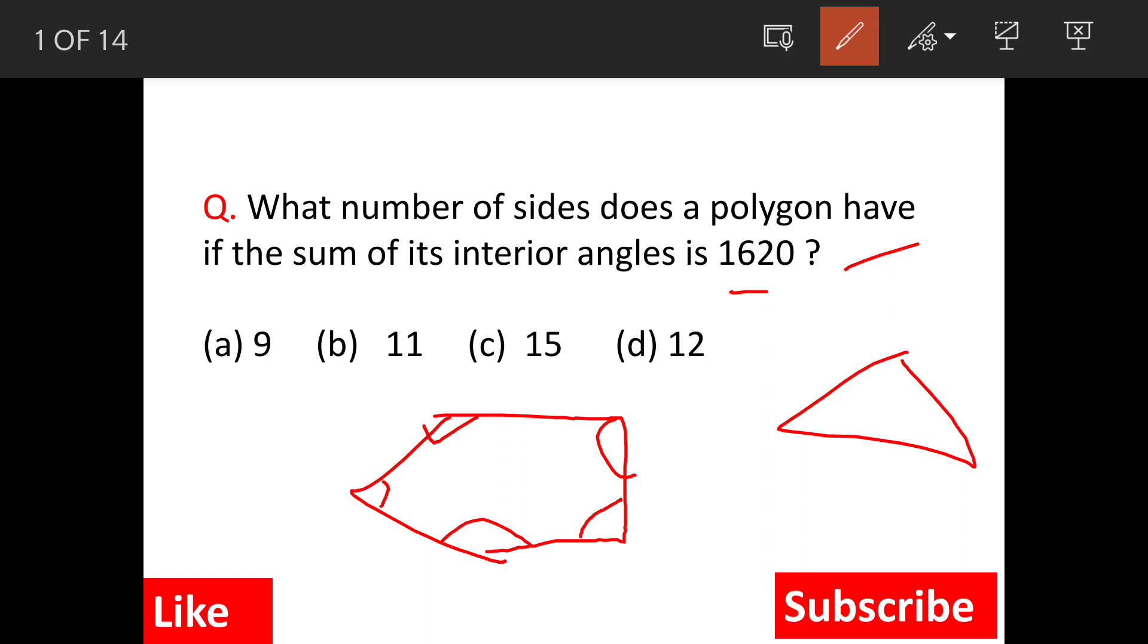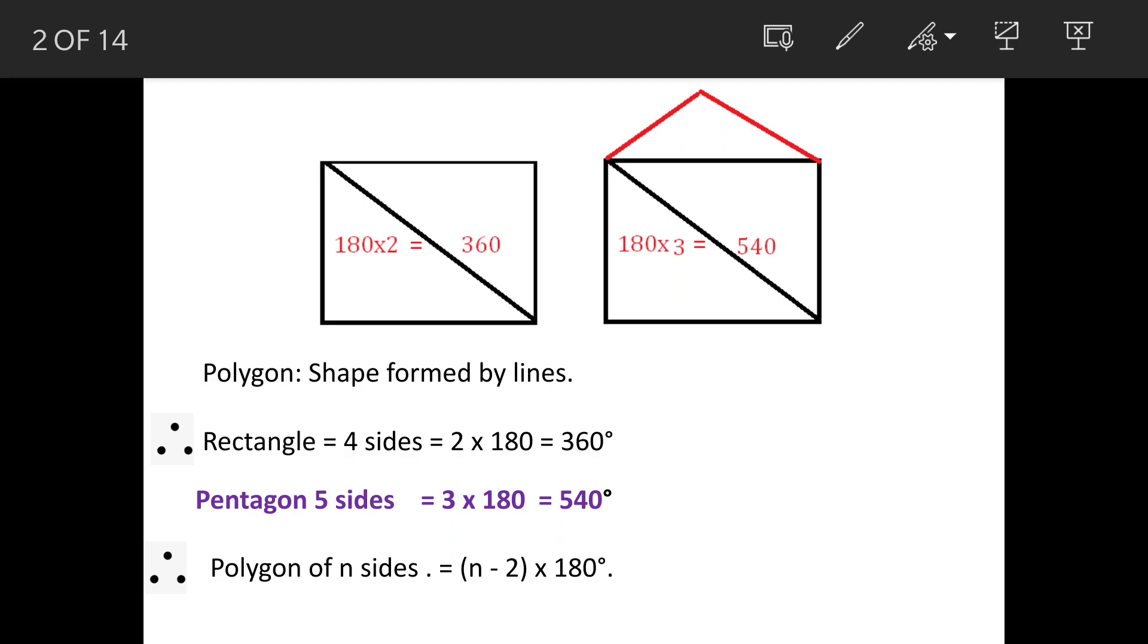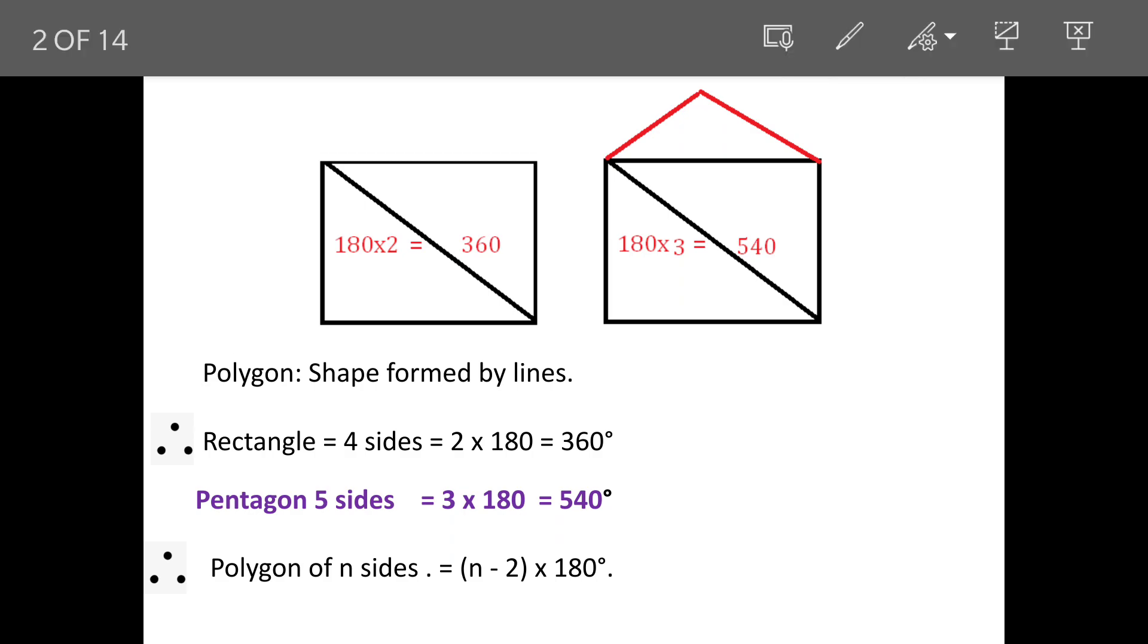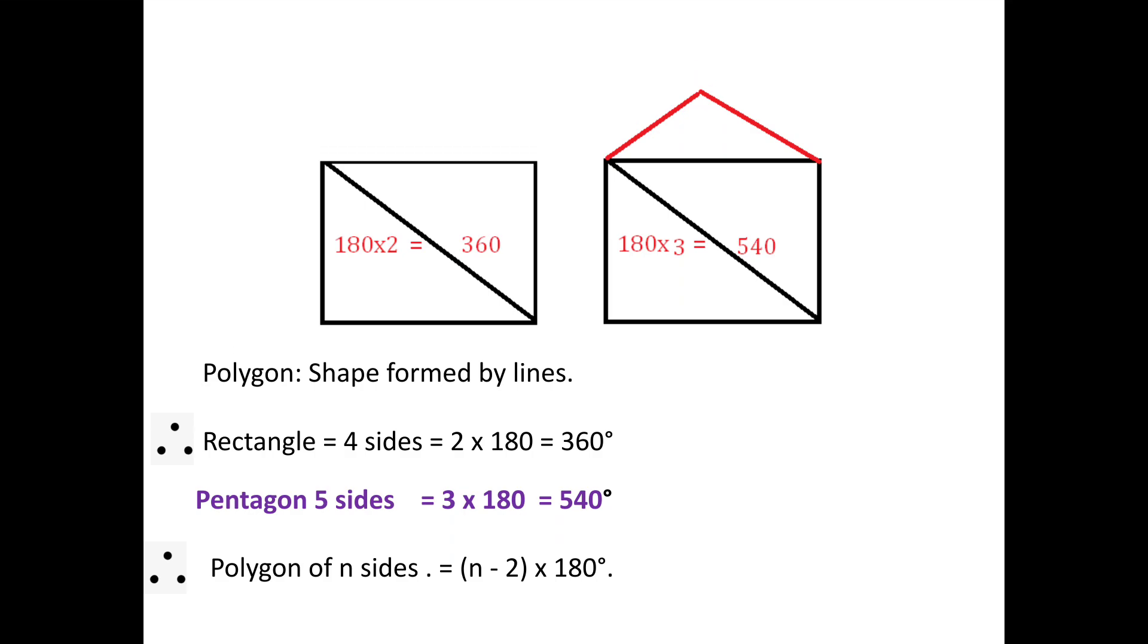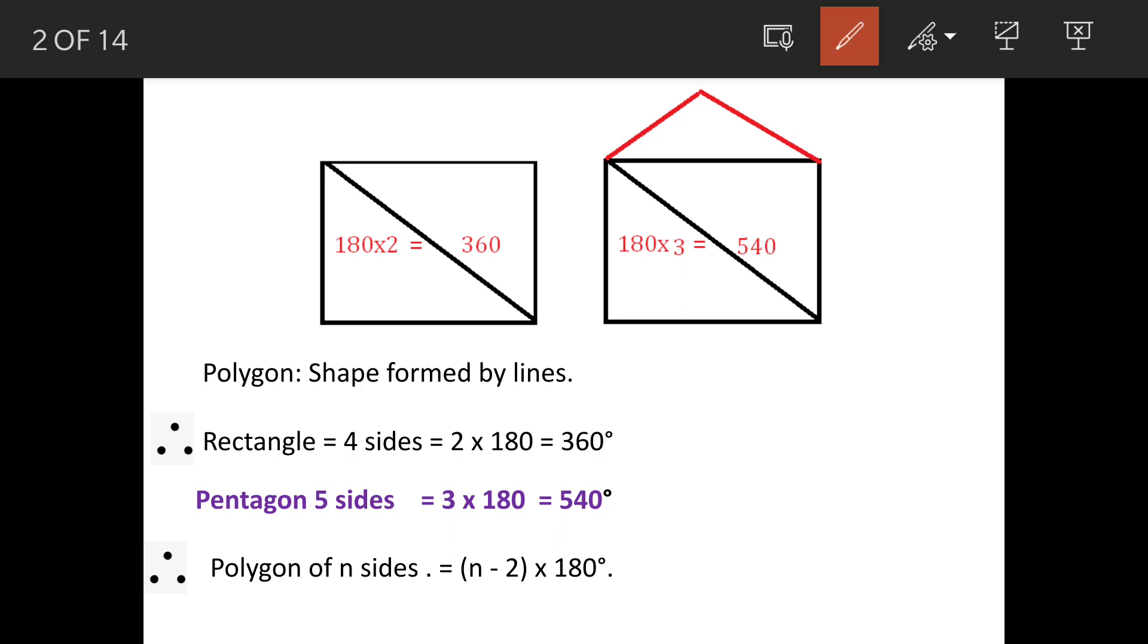We have a shape, we don't know how many sides it is having, but the sum of angles is 1620. So we will see that. Let's say we have a rectangle, so rectangle means two triangles, one is here and one is here.